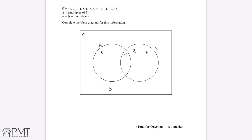7 is an odd number which is not a multiple of 3. 8 is even but not a multiple of 3. 9 is a multiple of 3 but is an odd number.